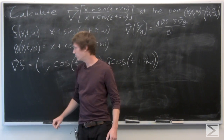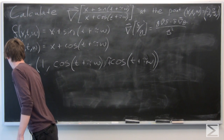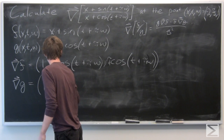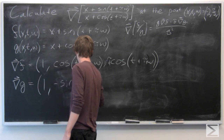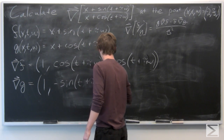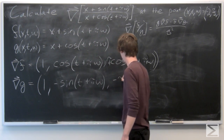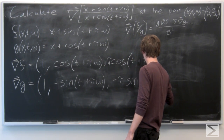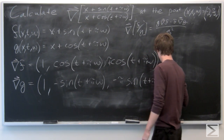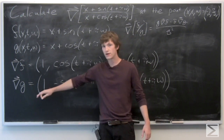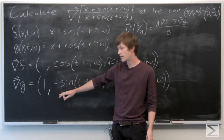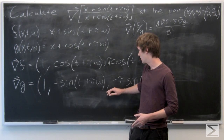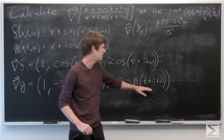The gradient vector of g can be calculated in the same manner. We get that the gradient vector of g is equal to (1, −sin(t + πω), −π·sin(t + πω)).